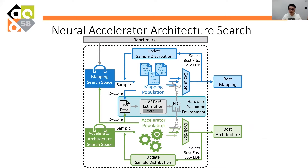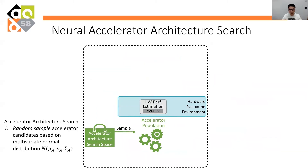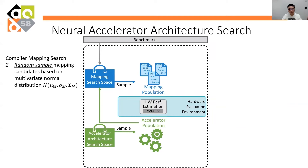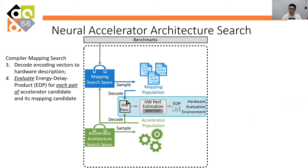We choose the CMA Evolution Strategy algorithm. We first randomly sample Accelerator Candidates based on a normal distribution to form a population. Each Accelerator Candidate and Neural Network Benchmark determines its unique mapping search space. We randomly sample the mappings based on the normal distribution, similar to the Accelerator Architecture search. A pair of mapping candidate and hardware candidate is then fed into a hardware evaluation backend to get the energy delay product as a reward. Here, we use Maestro as our evaluation backend, and it is easy to generalize to other backends too.